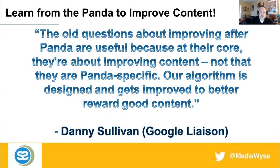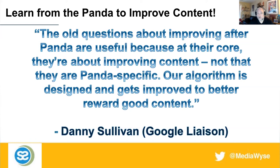When we're talking about content, we want to look back to the Panda algorithm, which was introduced in 2012. The old questions about improving after Panda are useful today because at their core they're about improving content. As Danny Sullivan, Google Liaison, said: 'Our algorithm is designed and gets improved to better reward good content.' He was responding to questions about surfacing highest-meets-needs content, especially in light of the increase in core web updates. He says go back to Panda — and that's really what we're going to be doing today.